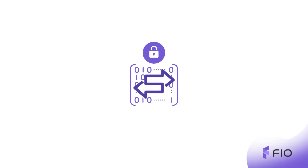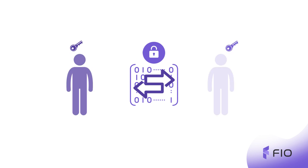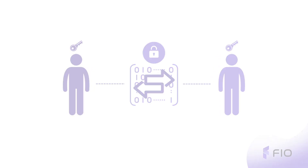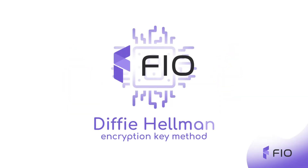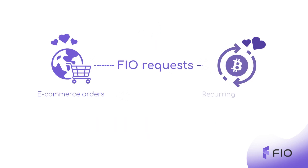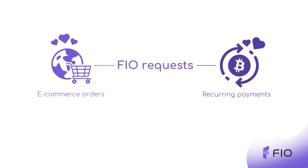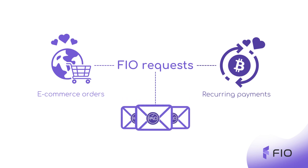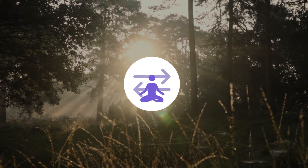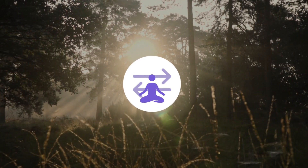Everyone can be sure that transaction data is private and readable only by the parties of the transaction, because the FIO protocol uses the Diffie-Hellman encryption key method. FIO Requests are great for e-commerce orders and recurring payments, because they work like prepaid bundle transactions. No more headaches over gas fees — stress-free transactions only, to give your mind ease.